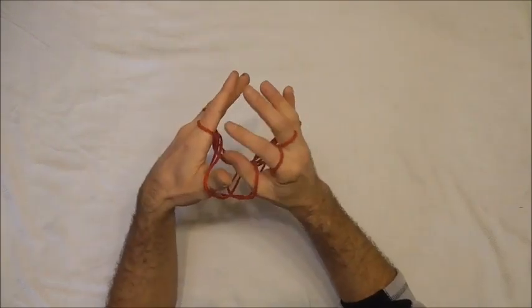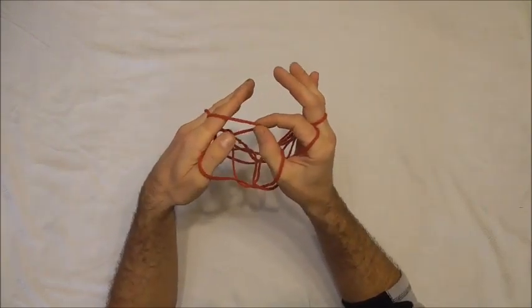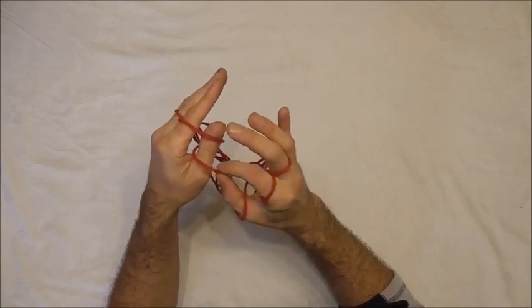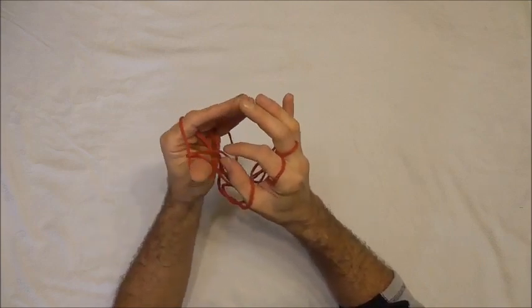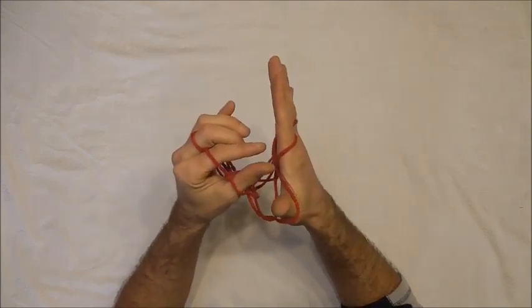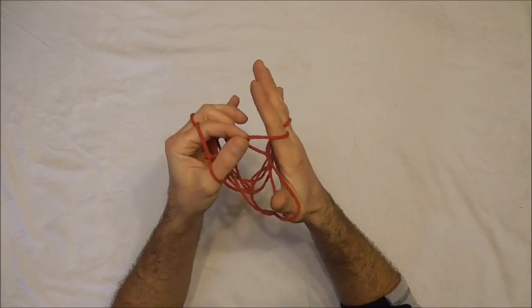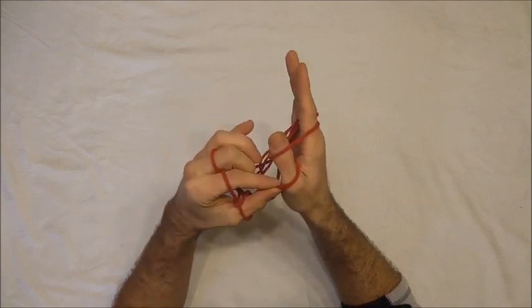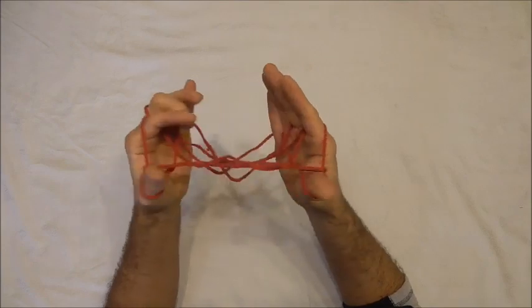I want to take the pointer finger string, place it over my thumb and then the lower thumb string over my thumb to the palm side. And the same with the other hand. Take the near pointer finger string over the thumb and the lower thumb string to the palm side.